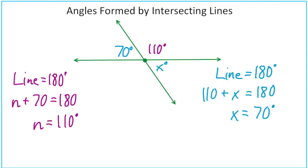But instead of using line equals 180 twice, every time we run across this situation, we have a name for this angle relationship. And we simply refer to this situation as vertical angles are equal. And since vertical angles are always equal, we don't have to use those two equations to solve for x. We can simply say x equals 70.